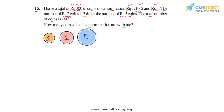We are told that the total number of coins is 160, and the number of 2-rupee coins is three times the number of 5-rupee coins. We can start solving the problem by assuming the number of 5-rupee coins is x. This means the number of 2-rupee coins will be 3x.